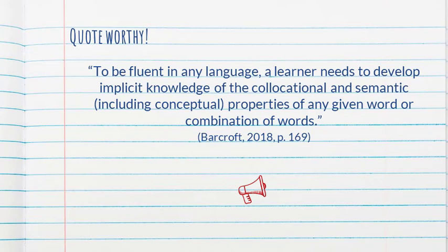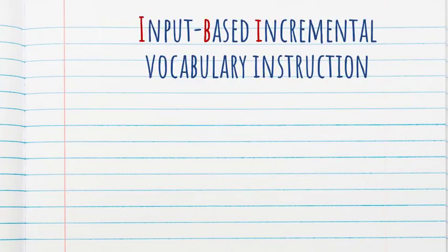We shouldn't try to get there in one lesson or one level. The author is not saying that we need to do all of this as soon as we introduce a word. That's why he proposes an approach that is gradual and incremental. This approach is called IBI — Input-Based Incremental vocabulary instruction.